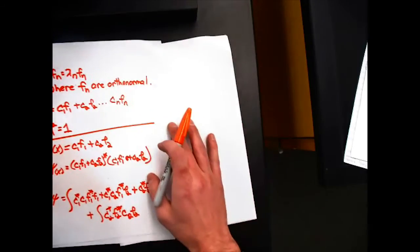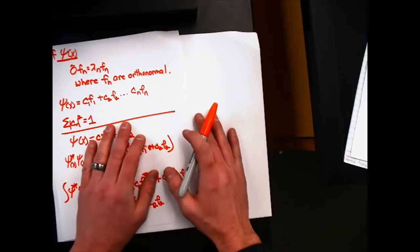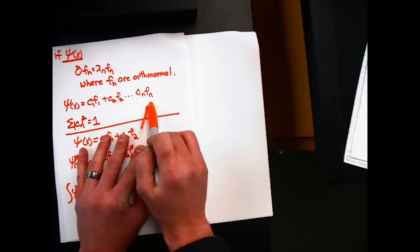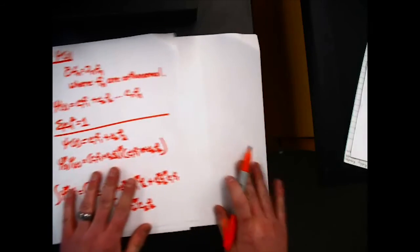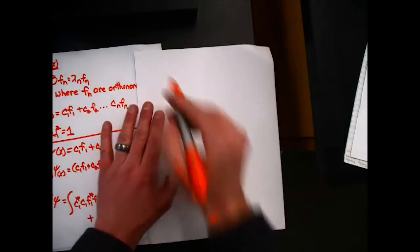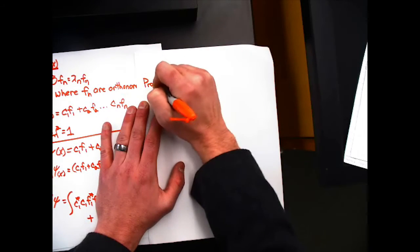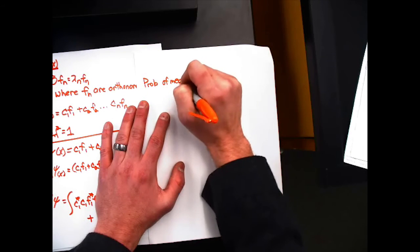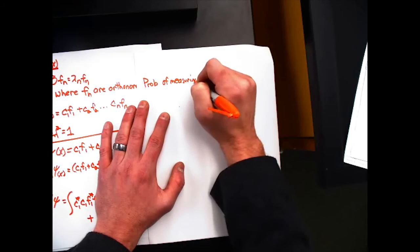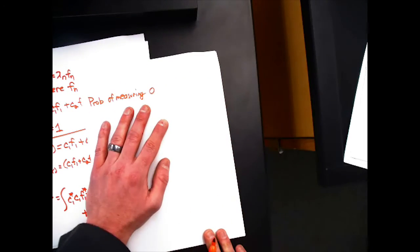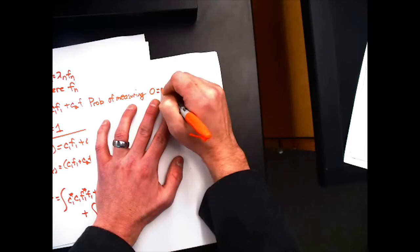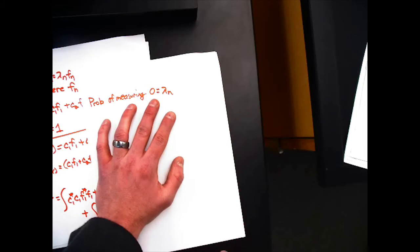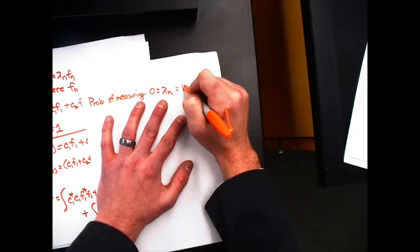If our wave function is written in terms of the expansion of the eigenfunctions of an operator, the probability of measuring the operator's property equal to a specific eigenvalue is equal to the magnitude of c sub n squared.